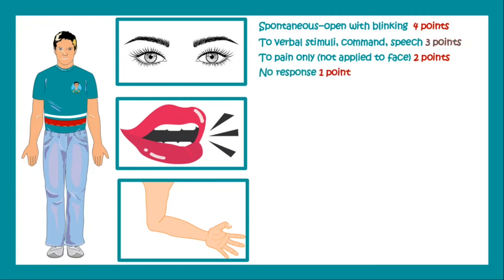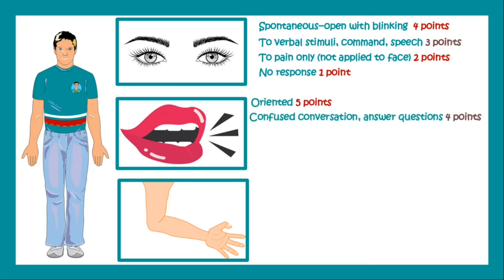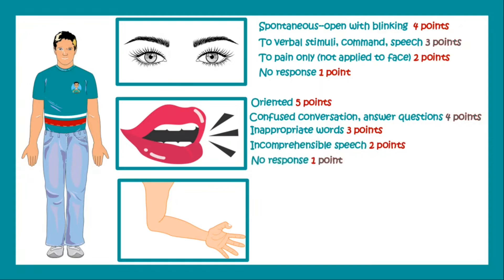In case of verbal response, when the patient is oriented and talks clearly, it is five points. Confused conversation is given four points. Inappropriate words are given three points. Incomprehensible speech is two points, and no speech is given one point.